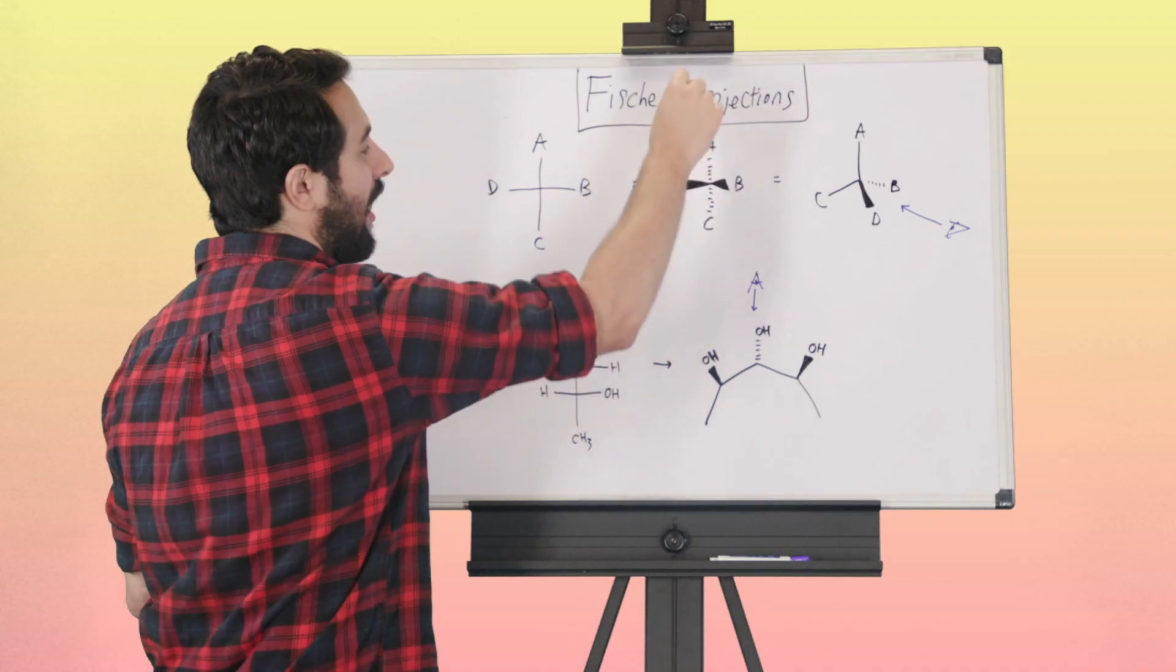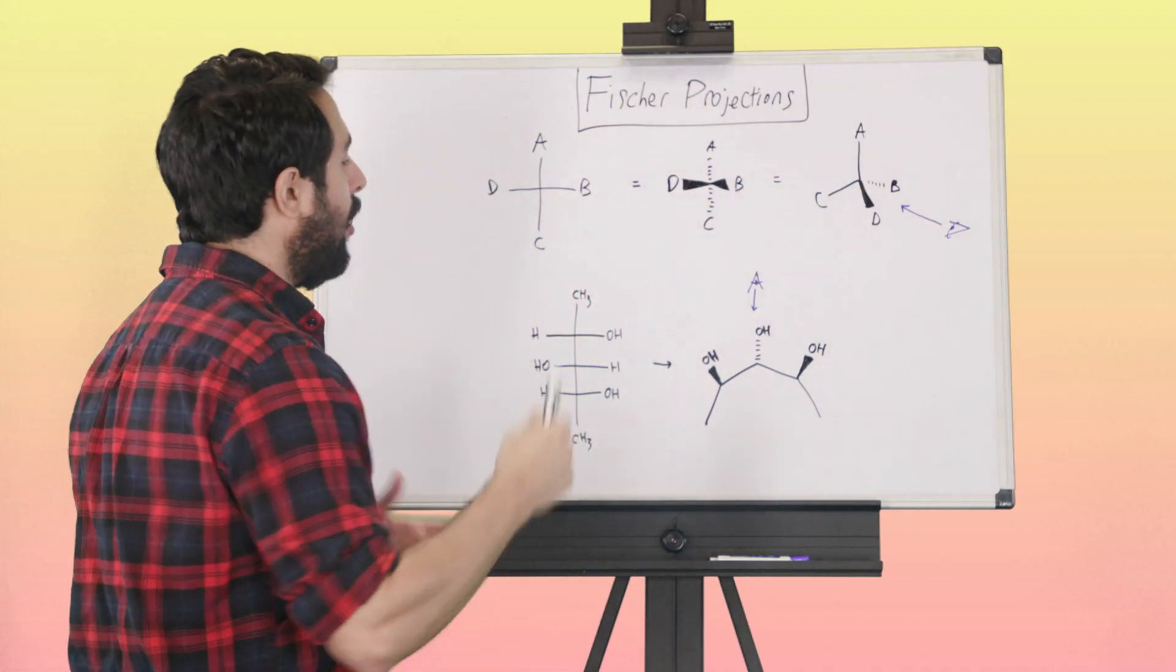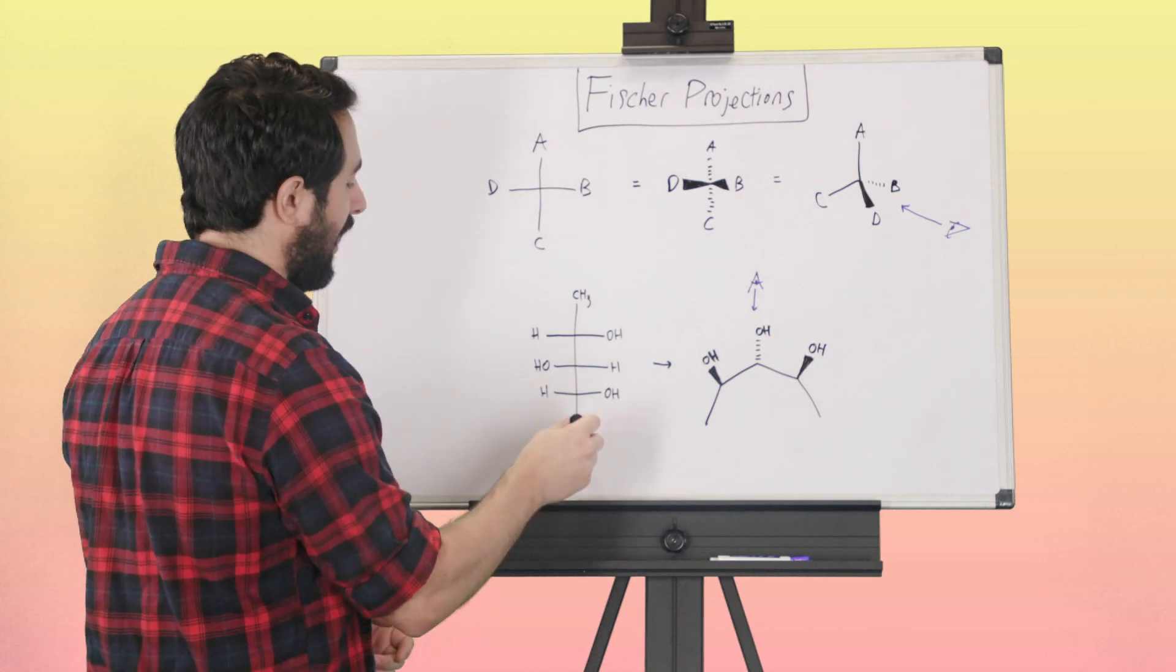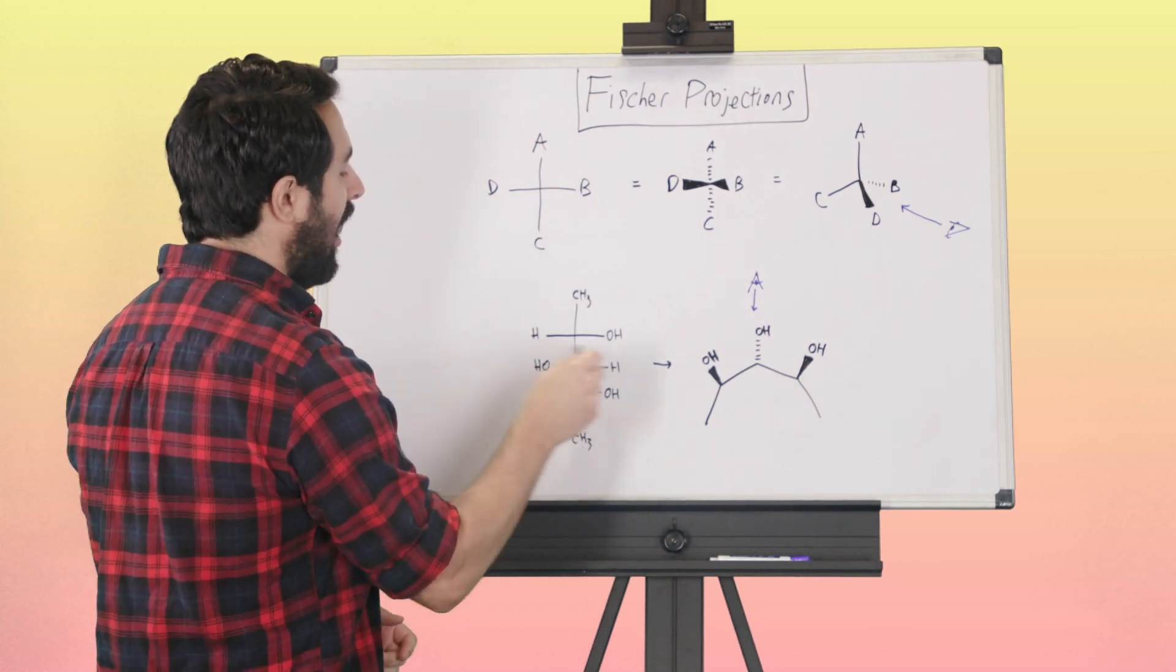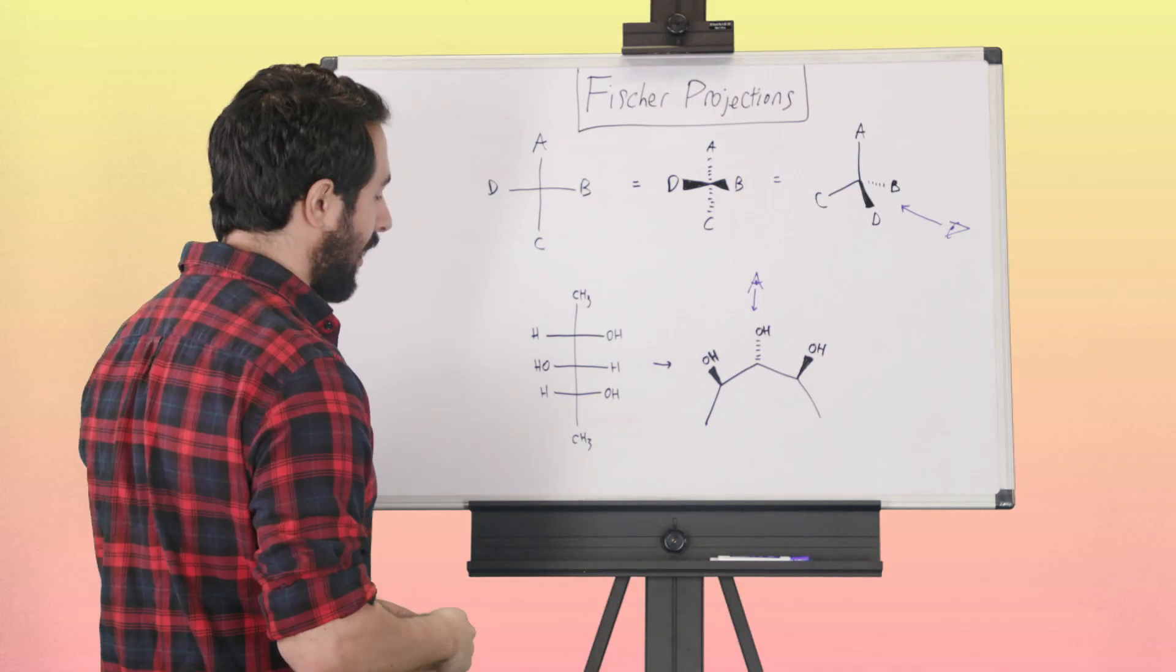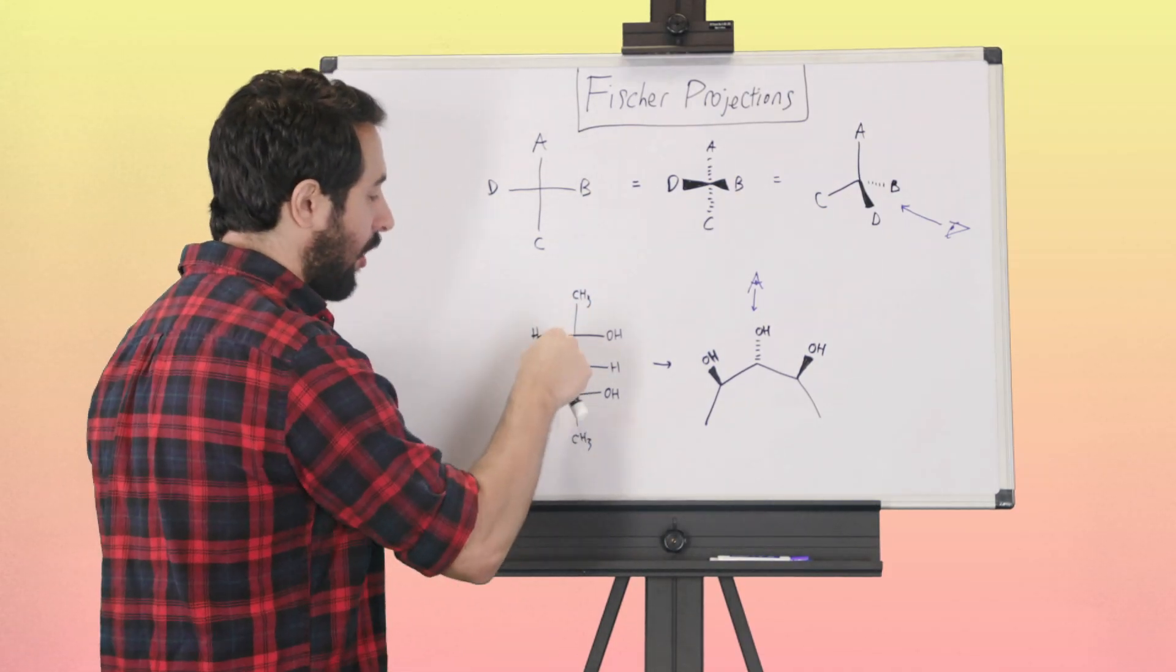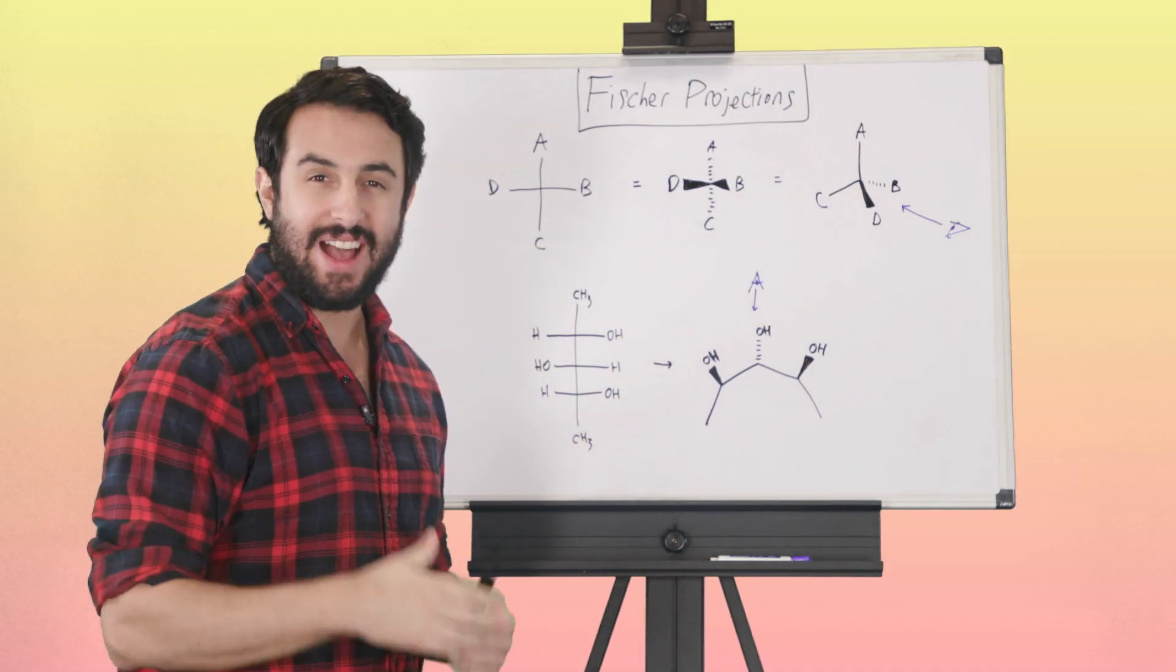We're typically going to see this with longer molecules like this. Imagine something like this—we've got methyls here and then we've got a hydroxyl on one side or the other on each of these three carbons. So we've got carbon, carbon, carbon.